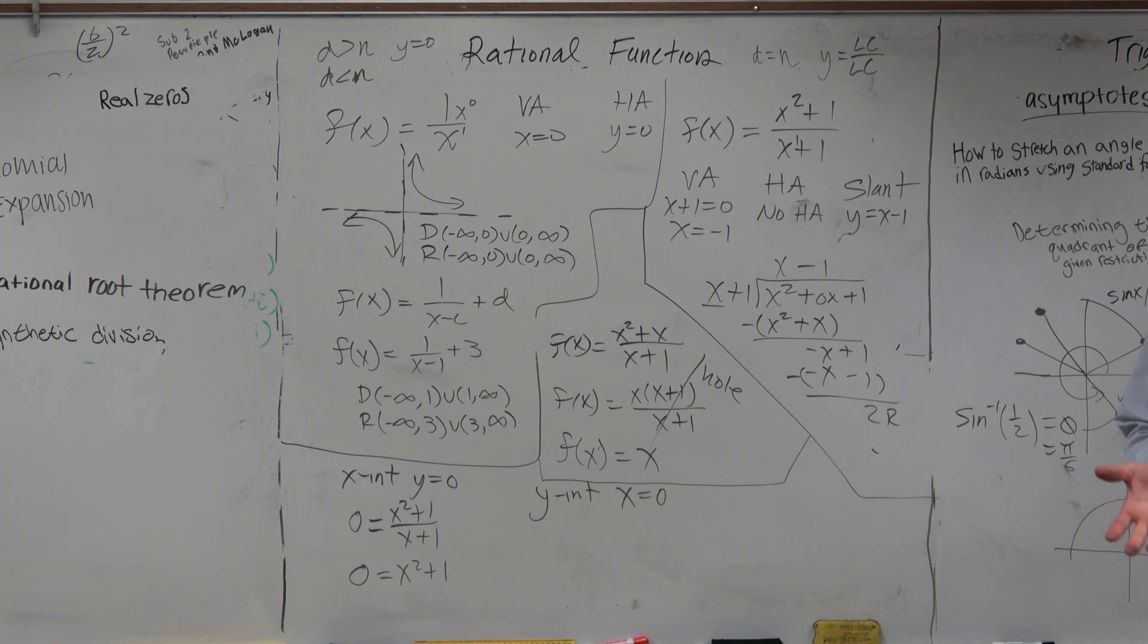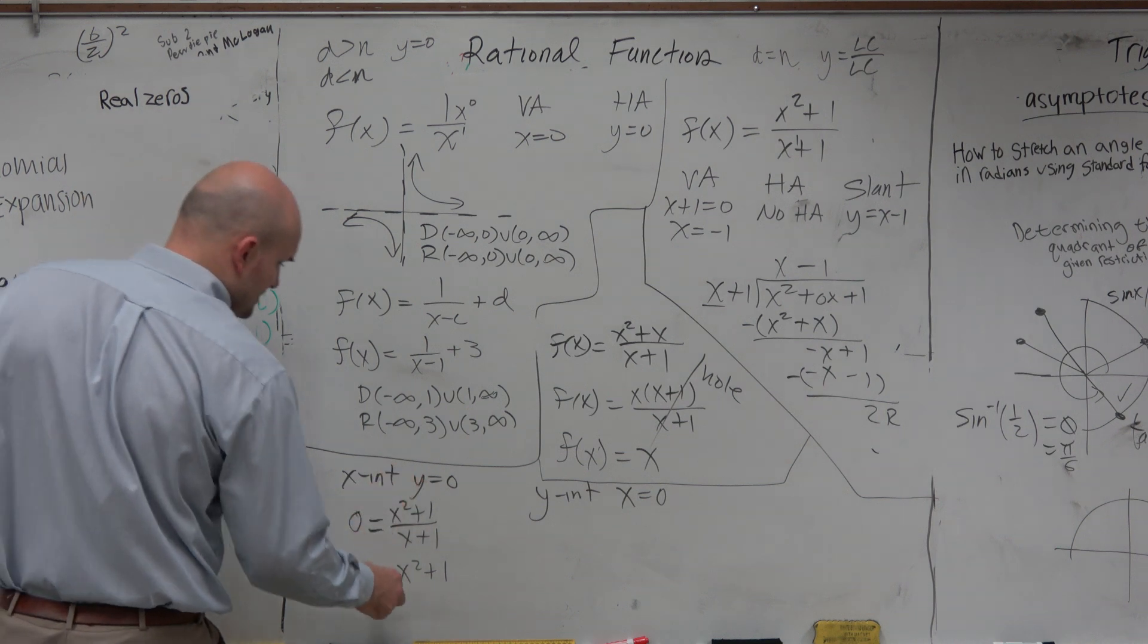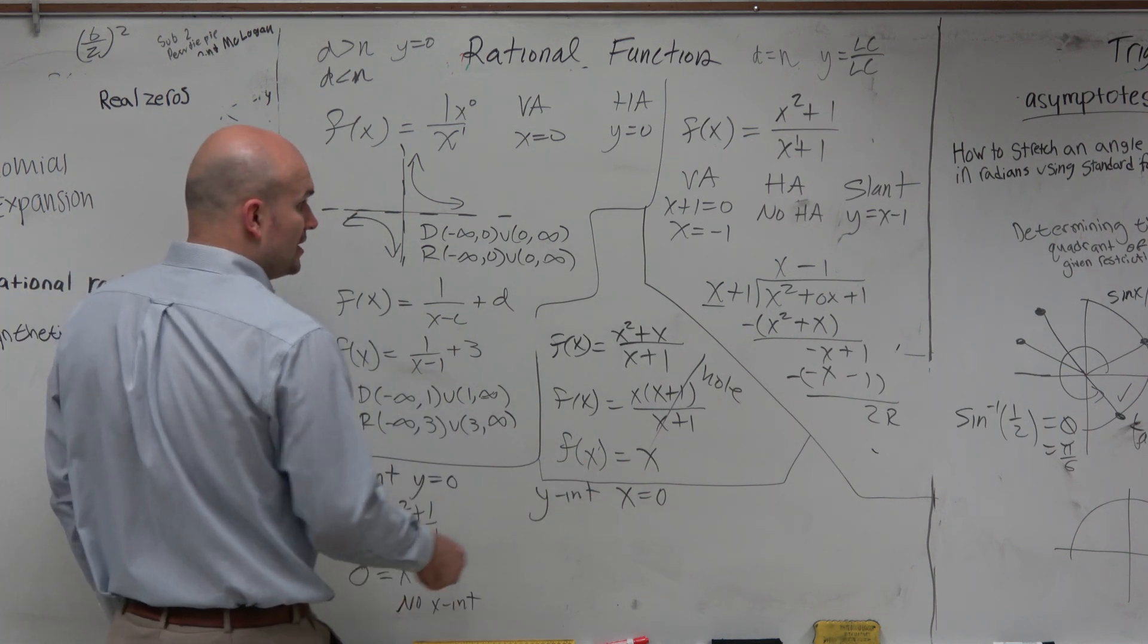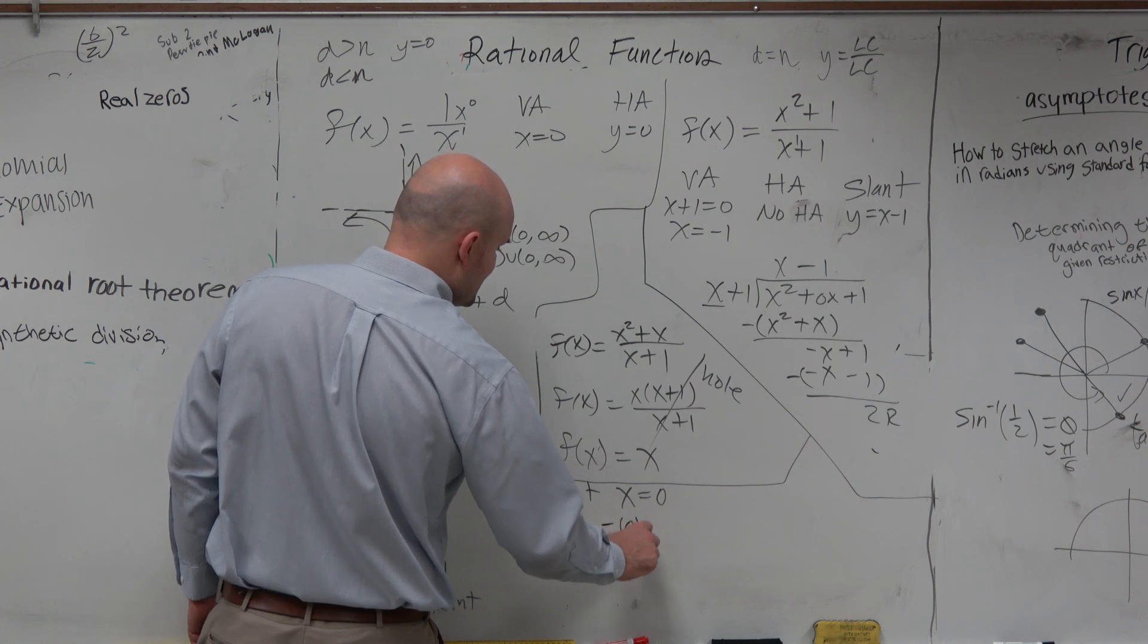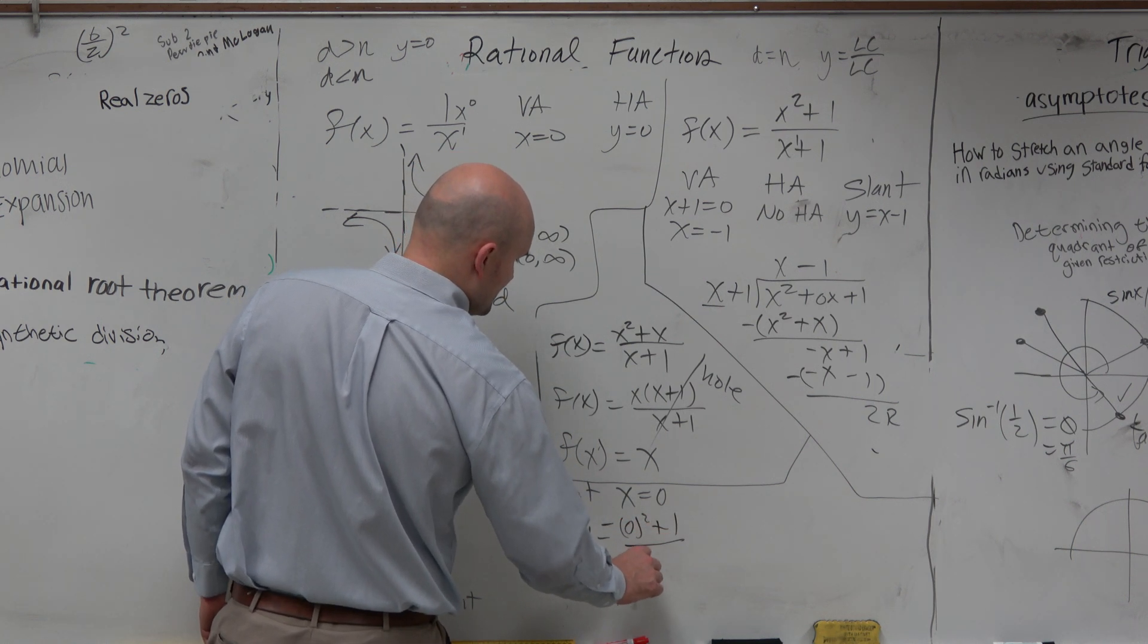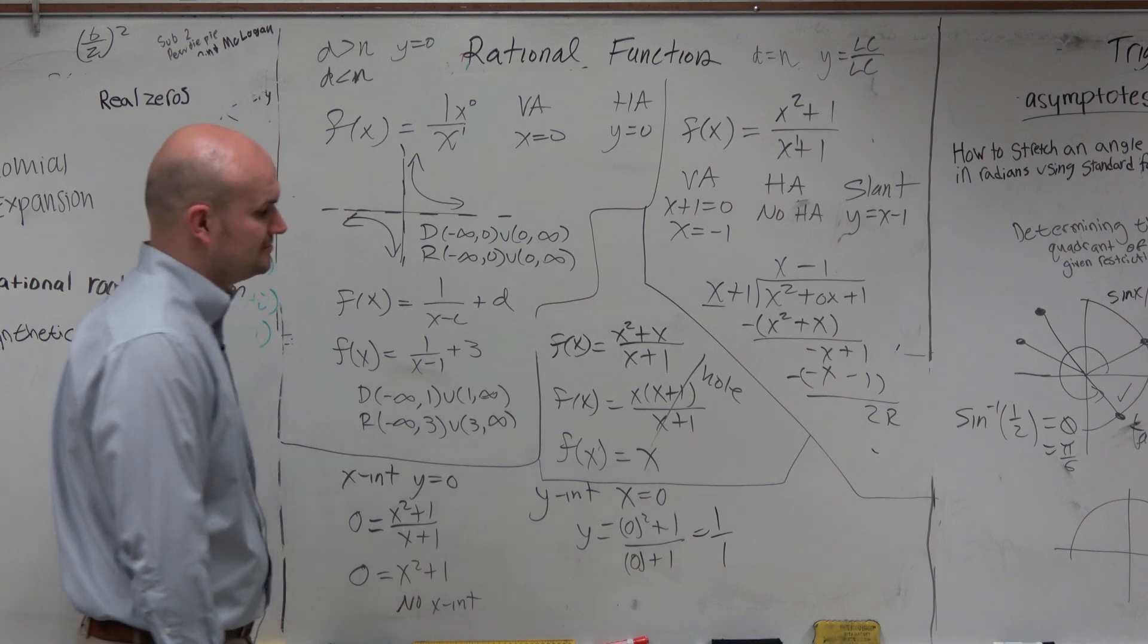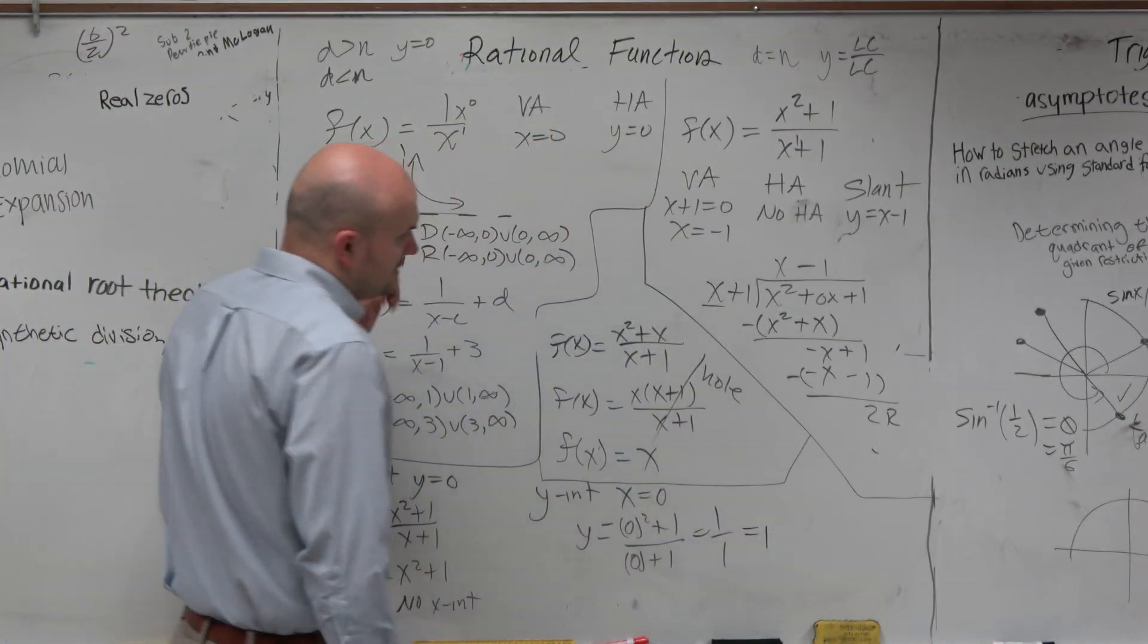Well, can our x-intercept be imaginary? No, we're looking for real values, right? So when you subtract 1, try to take the square root, there's no x-intercept, no real x-intercept. When we're taking the y-intercept for 0, remember we just plug in 0 in for the x. Or if you guys remember the shortcut, it's just constant over constant, which ends up giving you to be 1. So there is a quick review on rational functions.